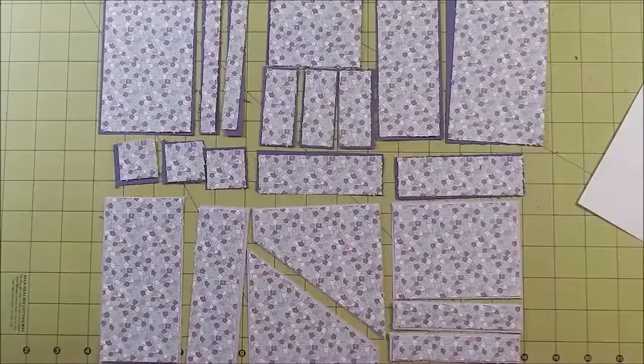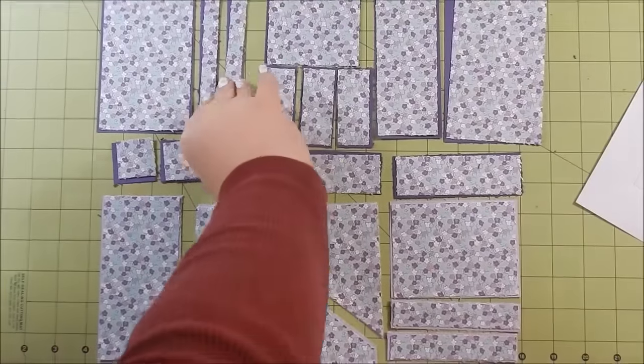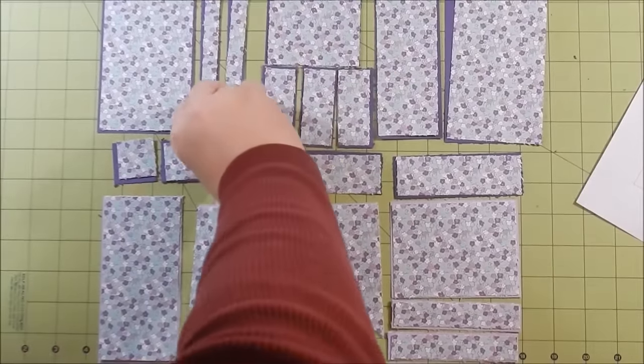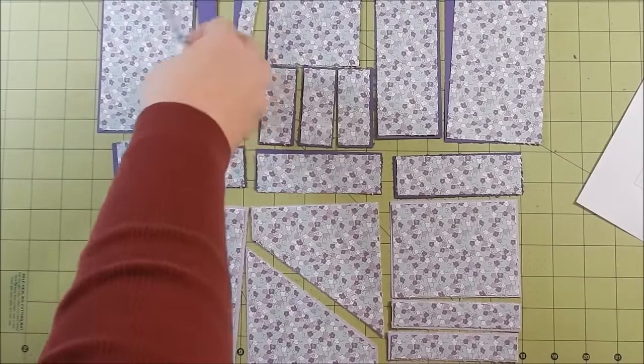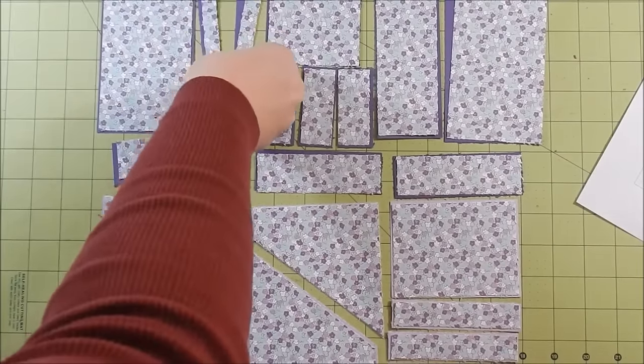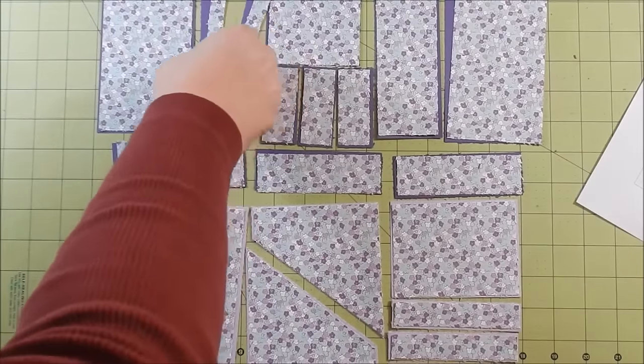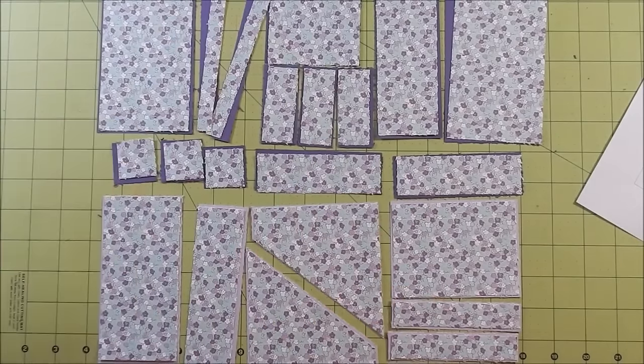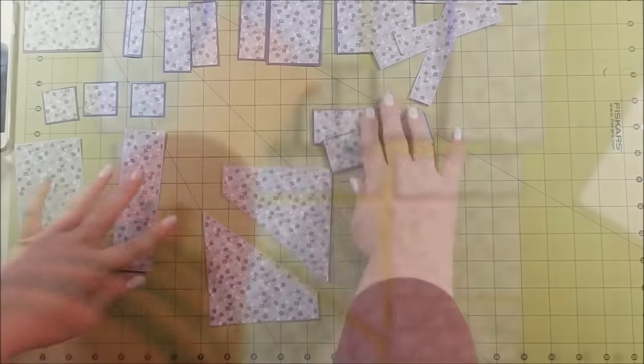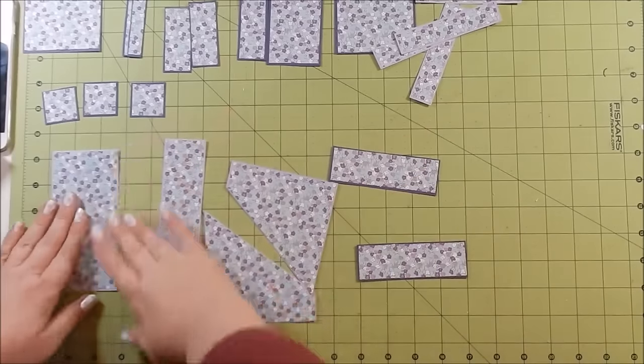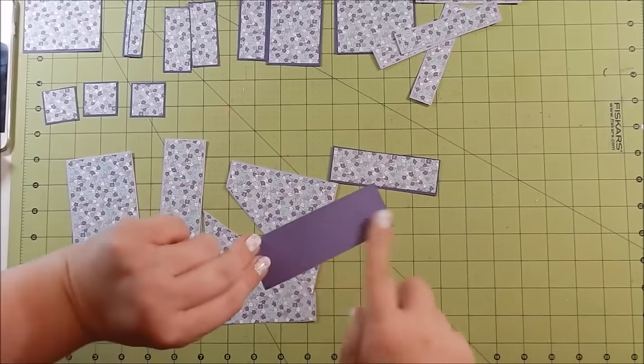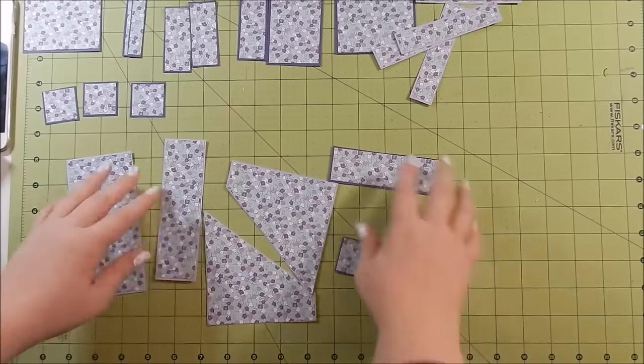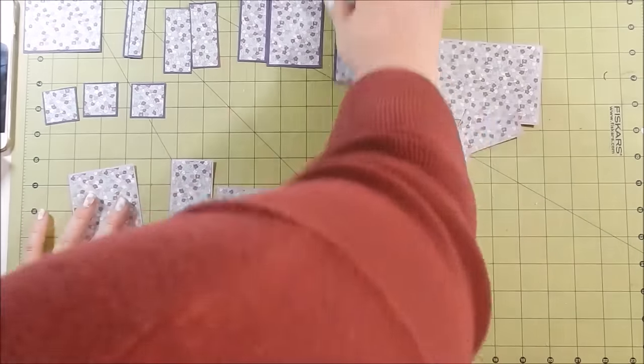All right guys, so as you can see I have cut - and my blade is dull so my paper is all raveled - but I have cut my little mats for my pieces. Now this is very time-consuming, but if you want to make something quick, I would say skip this part. Here are my mats, and to save time I've went ahead and glued my solid color to my pattern paper. So here they are.